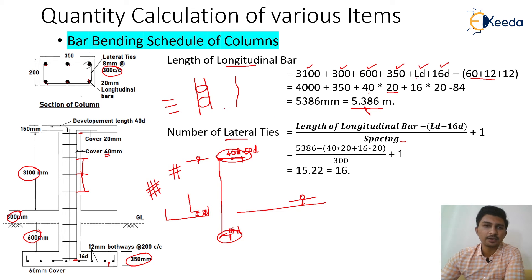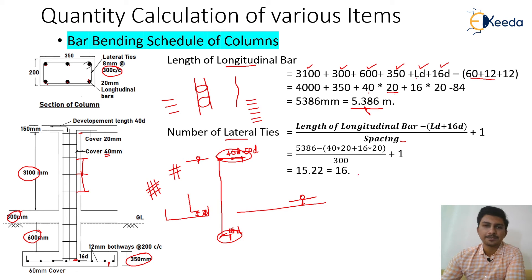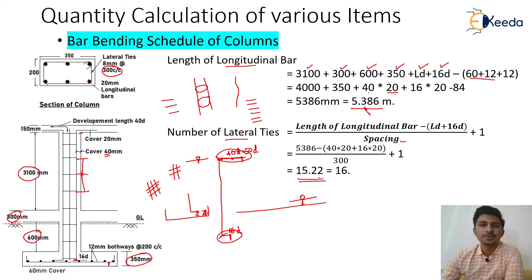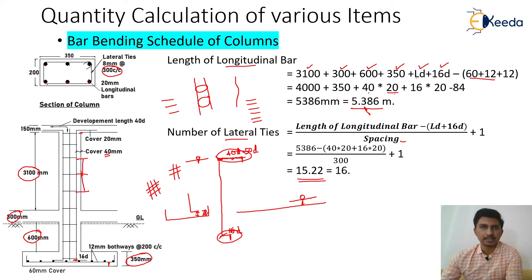When calculating reinforcement quantity we always add one to complete the total count. The calculated value comes out to be 15.22 — since we cannot provide 0.22 of a lateral tie, we round up to the next whole number. Therefore, the total number of lateral ties is 16.